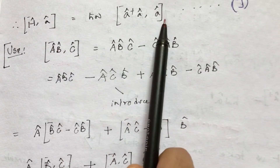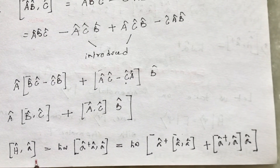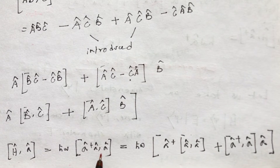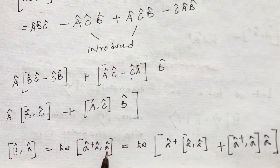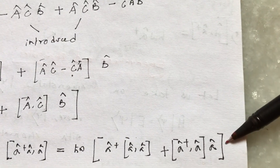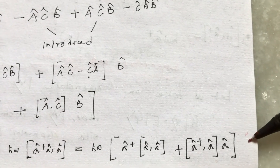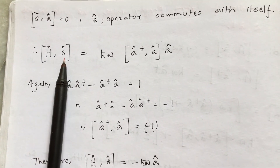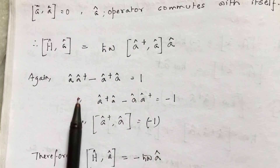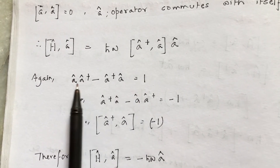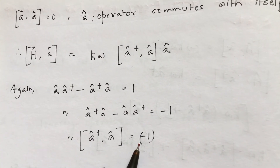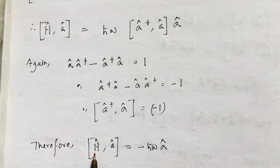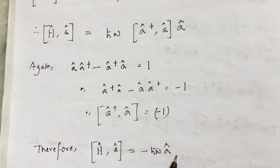Using this identity, [H, a] equals ℏω times [a†a, a]. Applying the identity, any operator commutes with itself so one term equals 0. Using the anti-commutation relation of a and a†, which gives minus 1, the commutation relation of the Hamiltonian and the lowering operator becomes [H, a] = -ℏω·a.